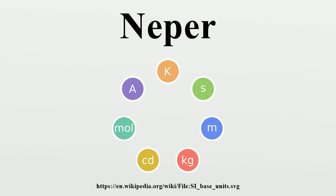In the ISQ, the Neper is defined as 1 Neper equals 1 unit. The Neper is defined in terms of ratios of field quantities, whereas the decibel was originally defined in terms of power ratios. A power ratio of 10 log R dB is equivalent to a field quantity ratio of 20 log R dB, since power is proportional to the square of the amplitude.